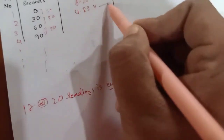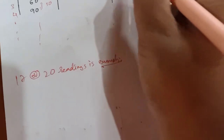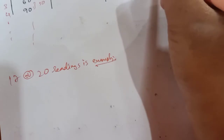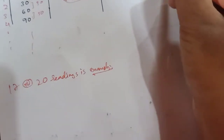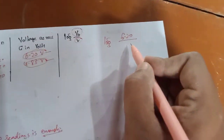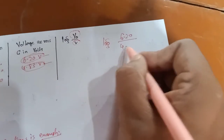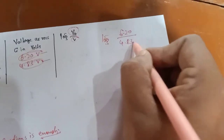This is the graph. V0 is the initial voltage, E is the initial voltage, and V is the subsequent voltage. Then we calculate log of V0/V — for example, log of 6.20 divided by 4.83 — and plot that value for each row of data.